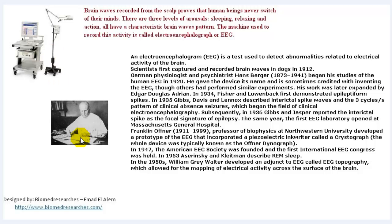A short brief of the history of EEG tells us that the first captured and recorded brain waves were in dogs in 1912. Then a German psychologist and psychiatrist called Hans Berger began his studies of the human EEG in 1920. He gave the device its name and is sometimes credited with inventing the EEG.